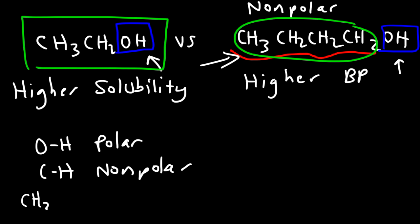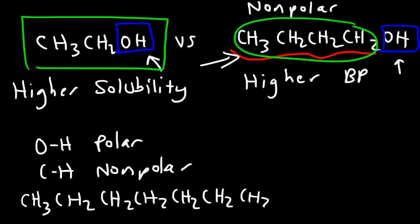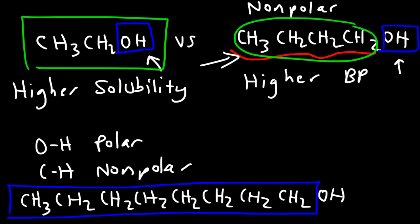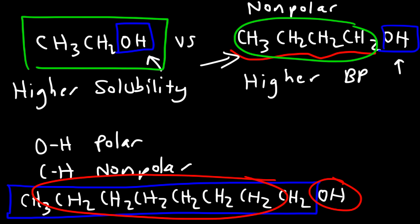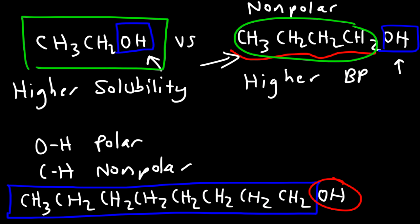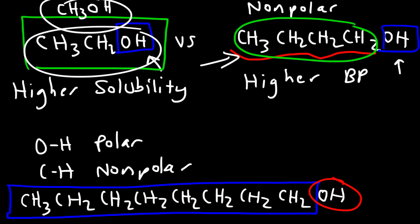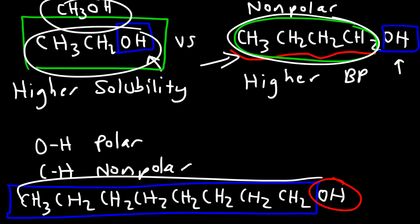Another example is 1-octanol, which has a total of eight carbon atoms. This molecule still has hydrogen bonds, however because it has such a large bulky nonpolar region, it's not soluble in water. It mixes with other nonpolar molecules like oil, but it doesn't mix in water, because the OH part is soluble in water but the CH part is not. Whenever you have small chain alcohols like ethanol or methanol, these are highly soluble in water. But when you add a lot of CH groups, solubility decreases while boiling point goes up. So 1-octanol has the highest boiling point of these three molecules, but methanol has the highest solubility because it has the least number of nonpolar bonds.